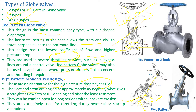In the Y-type, the seat and stem are angled at approximately 45 degrees. Because of this, the flow path is straighter and at full opening there is lesser resistance, meaning lesser pressure drops. They can be cracked open for long periods without severe erosion due to the easier geometry. Y-type globe valves are extensively used for throttling in seasonal or startup operations following a plant shutdown.